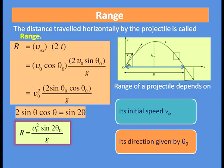The equation becomes R = V0² · 2 sin θ₀ cos θ₀ / g. Since 2 sin θ₀ cos θ₀ = sin 2θ₀, we get R = V0² sin 2θ₀ / g. The range of a projectile depends upon its initial velocity V0 and its direction given by θ₀.